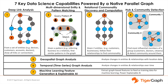TigerGraph extracts graph-based features to feed as training data for machine learning models, improving the accuracy for fraud detection, money laundering, recommendation engines, risk assessment, network and IT resource optimization, and more. TigerGraph also powers explainable AI by allowing users to query and understand the result from the AI solution with graph-based features.